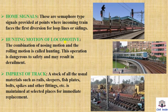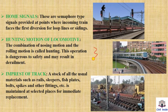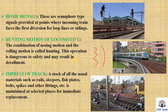Hunting motion of a locomotive. The combination of nosing motion and rolling motion is called hunting. Nosing is the side-to-side oscillation, and rolling is the rocking motion. This operation is dangerous to safety and may result in derailment, so we avoid conditions that produce hunting.